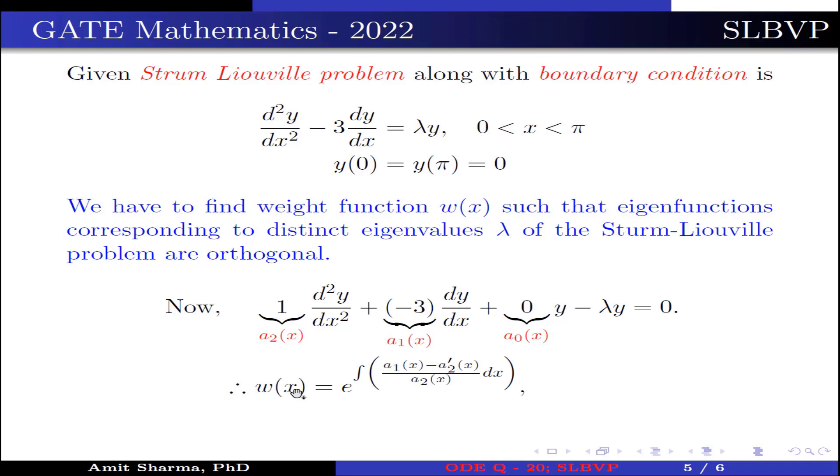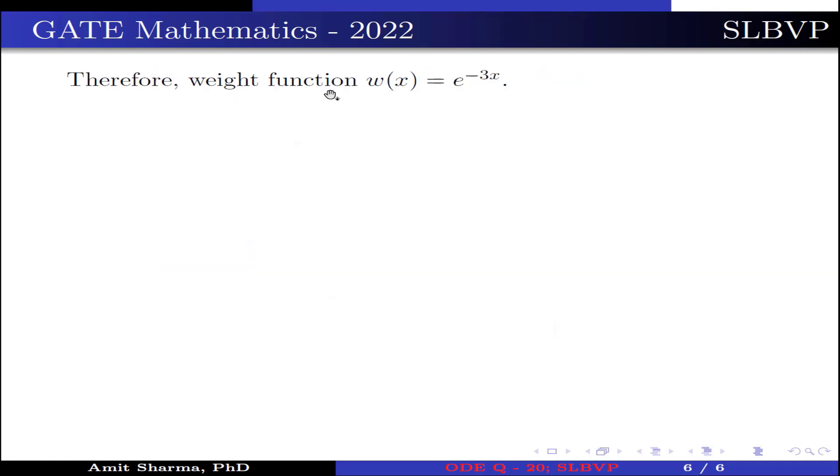Now we know that w(x) = exp[∫(a₁(x) - a₂'(x))/a₂(x)·dx]. Substituting the values of a₁(x), a₂(x) and a₂'(x), we have w(x) = exp[∫(-3)dx] = e^(-3x). Therefore, weight function w(x) = e^(-3x), hence option (A) is correct.